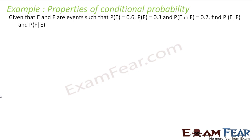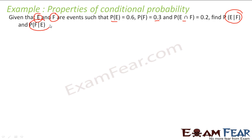Let us take some easy examples totally based on the properties of conditional probability. We have been told that E and F are two events such that probability of E is 0.6, probability of F is 0.3, and probability of E intersection F is 0.2. Find probability of E given F and probability of F given E — both may or may not come out different.